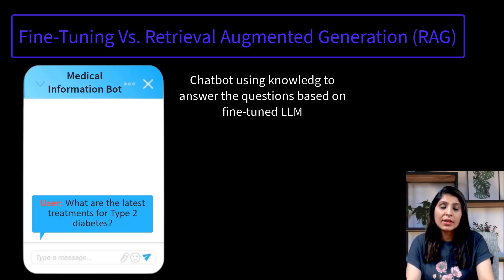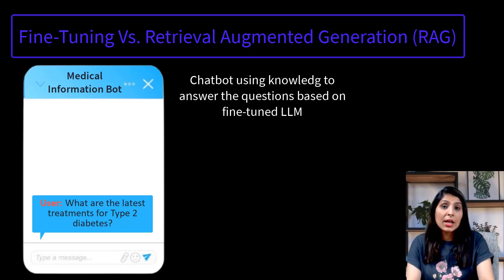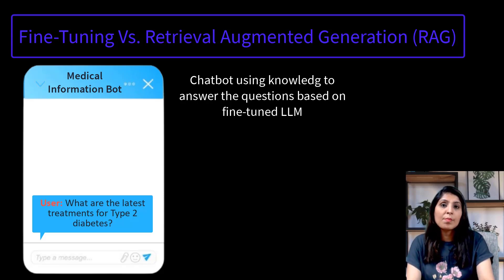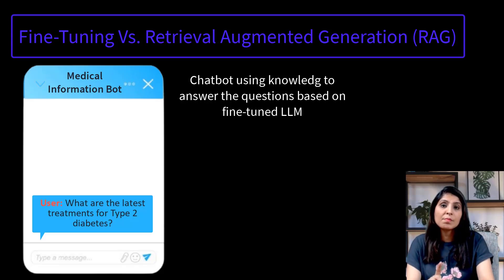A fine-tuned model means we take a pre-trained LLM — which can be any LLM like Llama, Mistral, Gemma, GPT-3.5, GPT-4, or any other — and then train it on our specific dataset. In this case, our specific dataset is a medical dataset. Once you have a fine-tuned model, that model will generate responses based on the knowledge it acquired during the training phase, meaning it can only answer questions based on the data it was trained on.